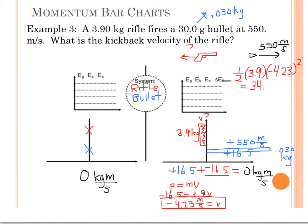And we can do the same thing for the bullet. The bullet has a mass of 0.03 kilograms and a velocity of 550 meters per second, which is an energy of 45,000 joules.